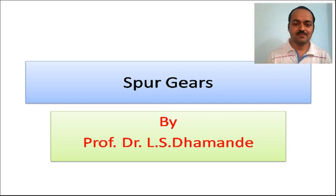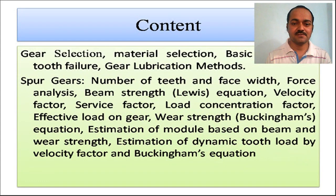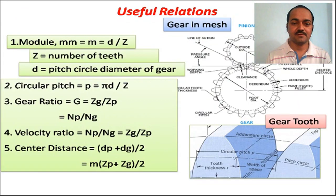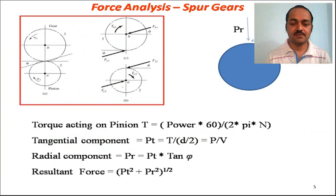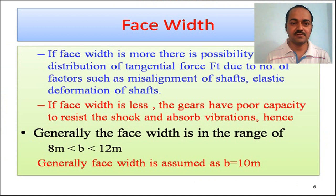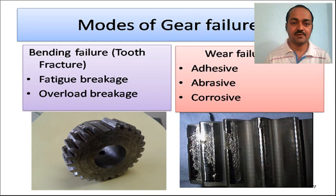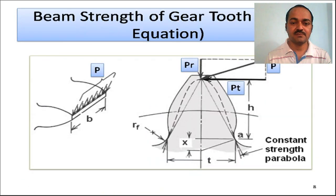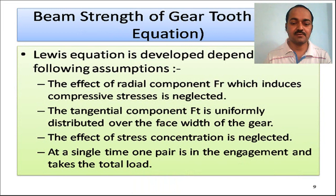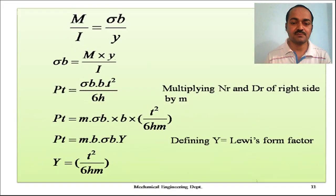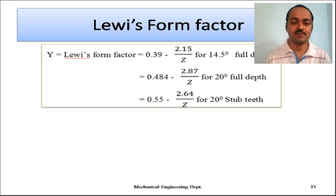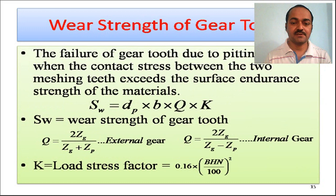Welcome back. In the last presentation, we covered the design of machine elements unit number one on spur gears, including the terminology of spur gears and important relations. We discussed how face width is important and its range, and the basic gear failure modes - wear failure and bending failure. We examined the beam strength equation and found that beam strength equals sigma b times b times m times y.